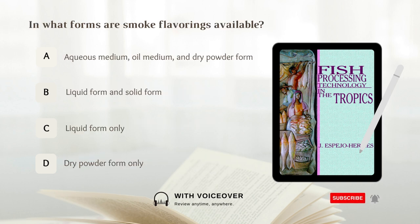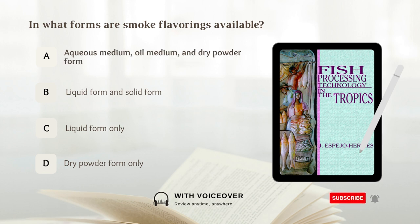In what forms are smoke flavorings available? A. Aqueous medium, oil medium, and dry powder form. Answer: A. Aqueous medium, oil medium, and dry powder form.